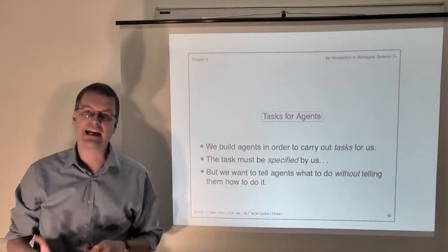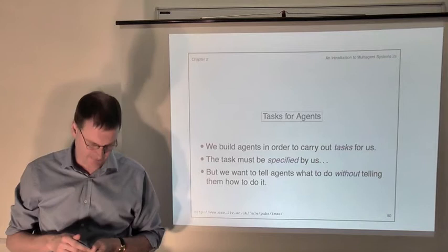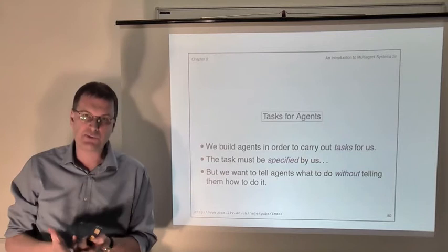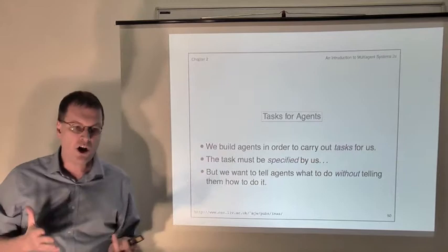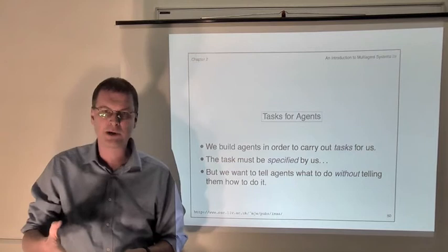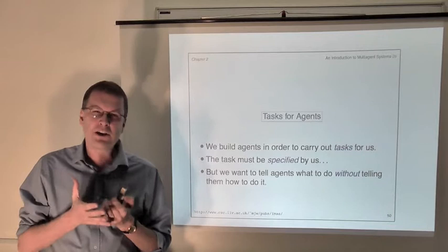So far, we've been talking about the idea of delegating tasks to agents without actually saying anything about how this should be done. One key question is exactly how do we describe what it is we want an agent to do for us when we delegate a task? Well, one simple way to tell an agent what to do is to simply give it a program, and the task of the agent is to execute that program.